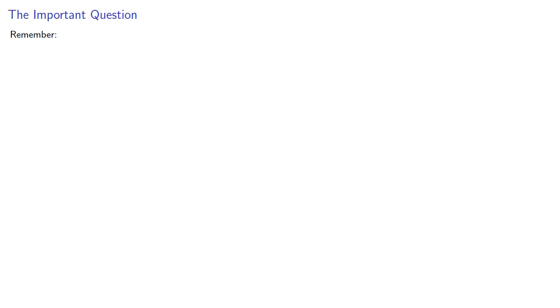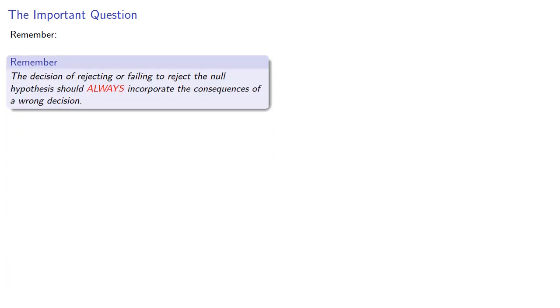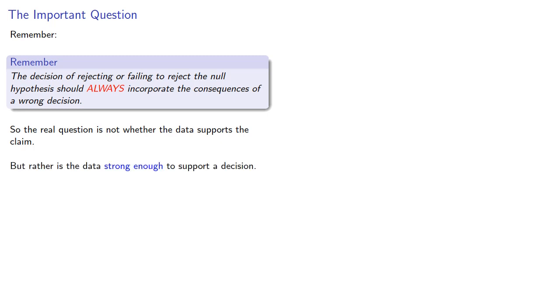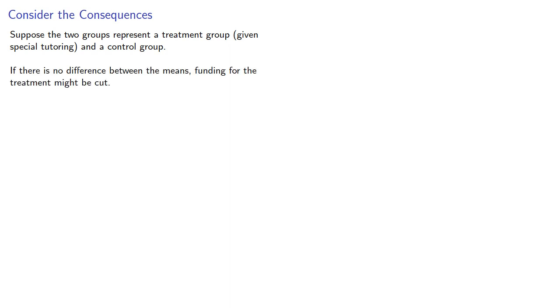The probability and statistics will give us a p-value, but the important question is what we do with it. The decision of rejecting or failing to reject the null hypothesis should always incorporate the consequences of a wrong decision. The real question is not whether the data supports the claim, but whether the data is strong enough to support a decision. To answer that, we have to consider the consequences. If there is no difference between the means, funding for the treatment might be cut, and the null hypothesis is that there is no difference between the two groups.